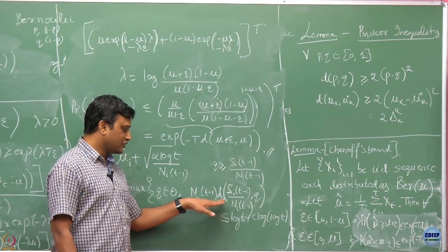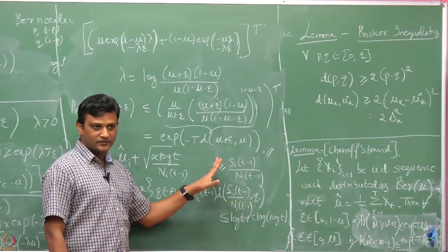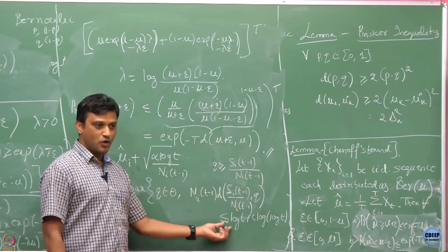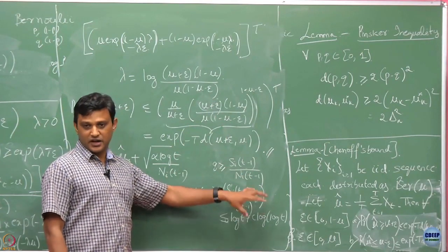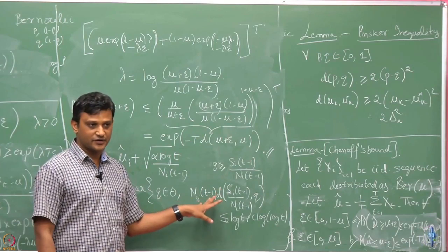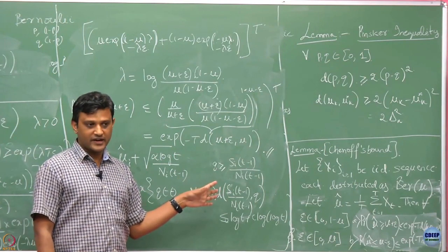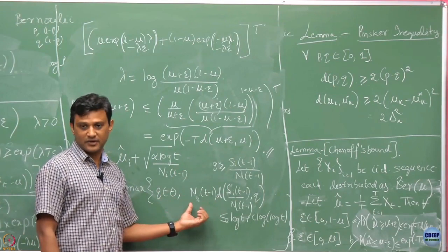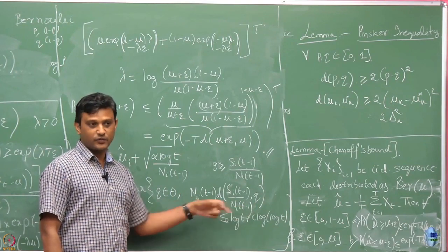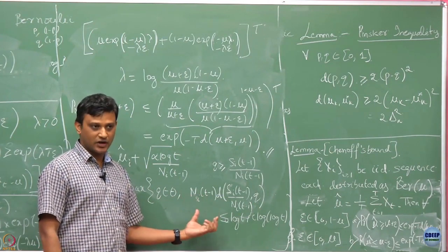Since this KL divergence is an increasing function of q for q larger than mu-hat, at some point as q increases it will violate the constraint, and the point just before it violates is the maximizer. In general this is a convex optimization problem. If you just call a standard convex optimization module it could take quite some time. You should exploit the monotonicity property of the divergence to quickly find this q and significantly reduce your run time.